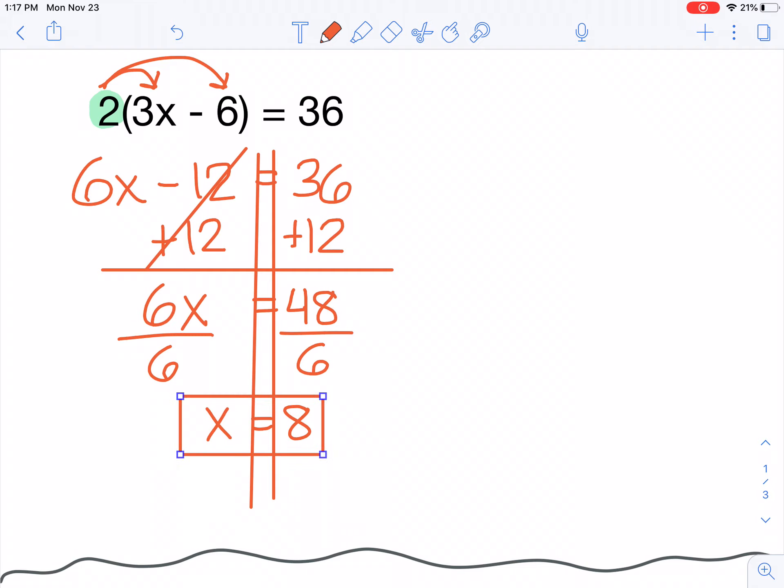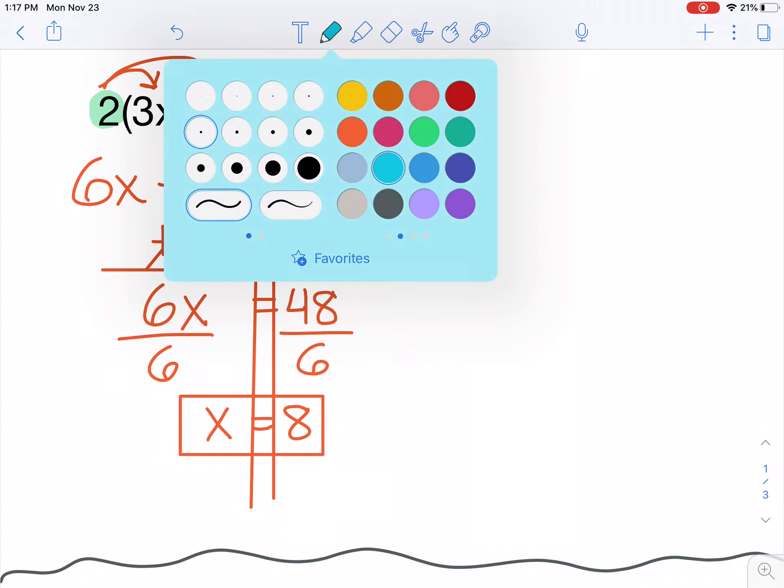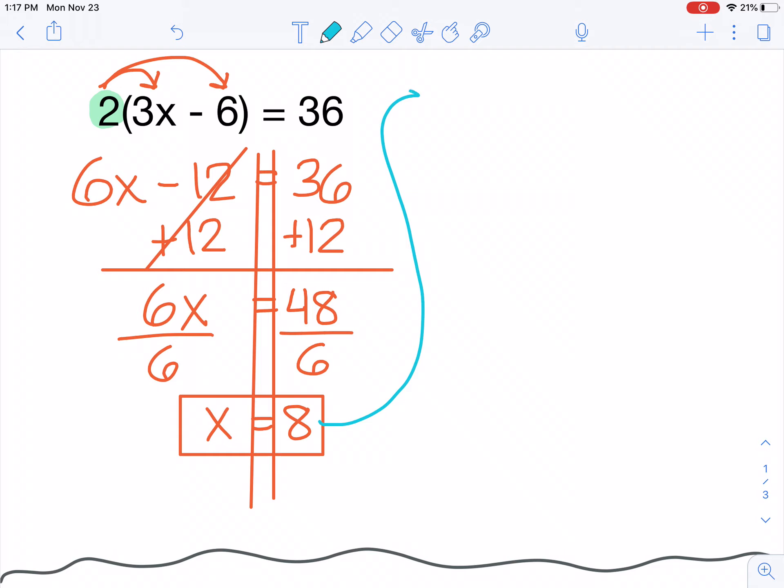Now, similarly to our last station, when we check our work, we need to go all the way back to the beginning equation. We never want to check our work in a simplified equation, just in case we've made a mistake. We might not catch it that way. So I need to go all the way back to the beginning and plug in the number 8 where I see the value of x.